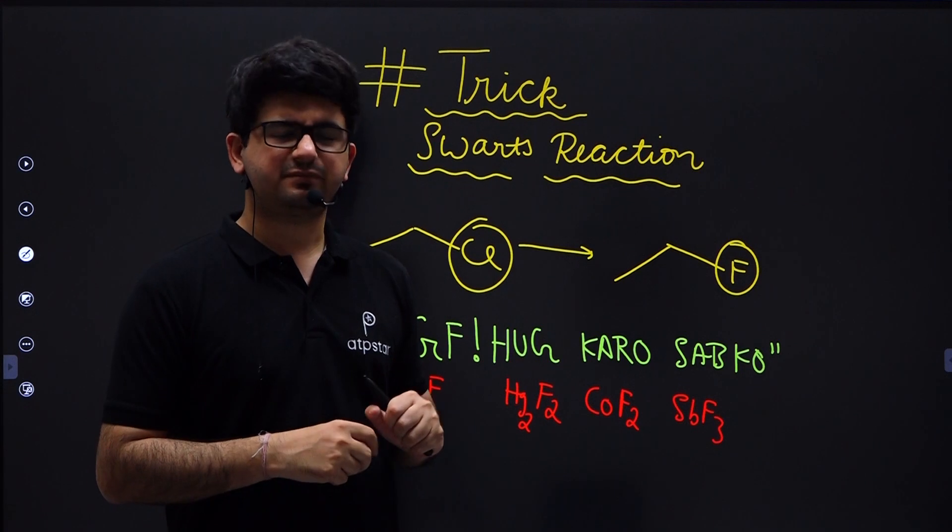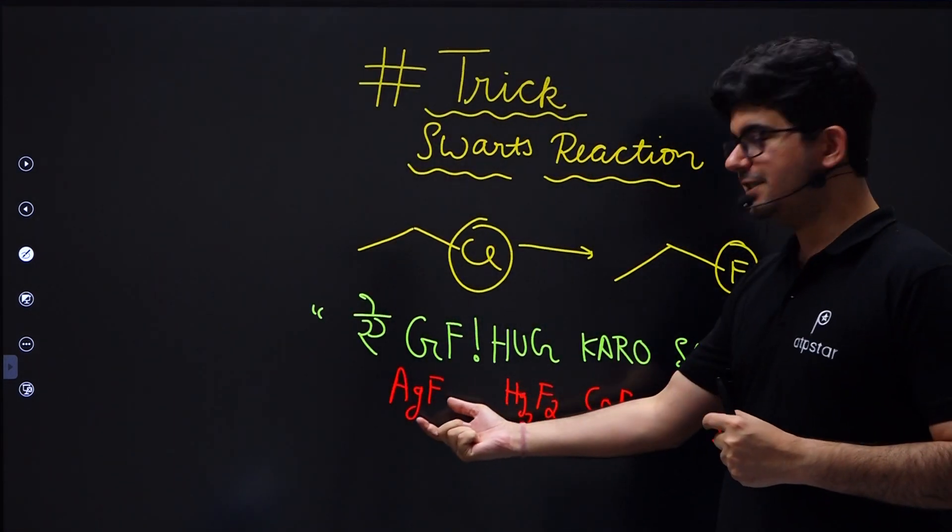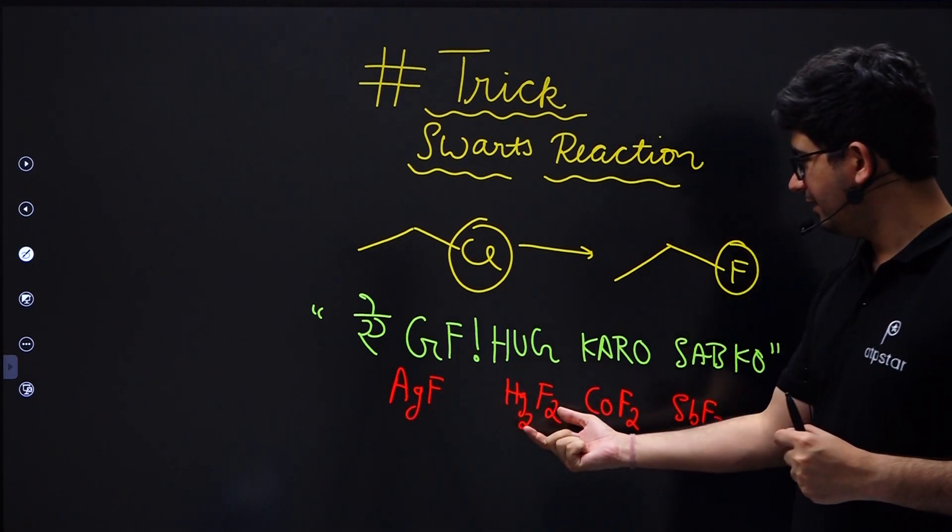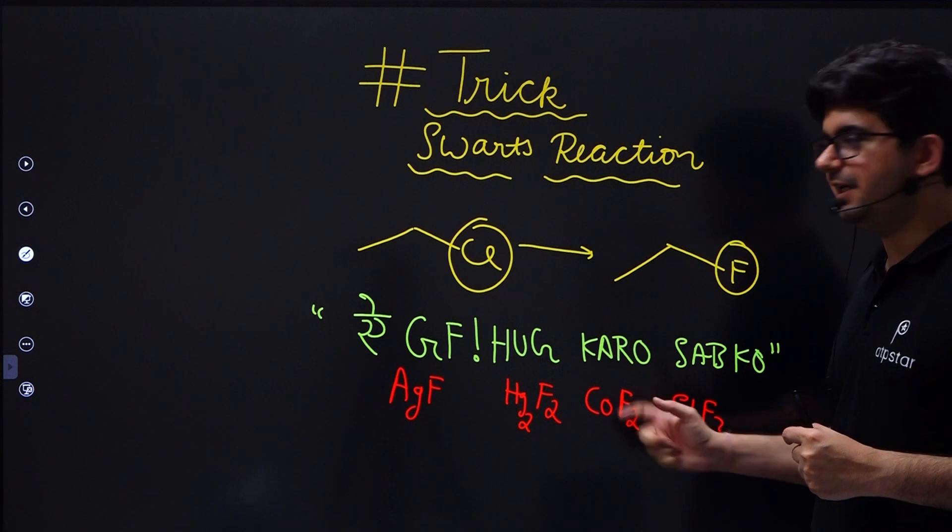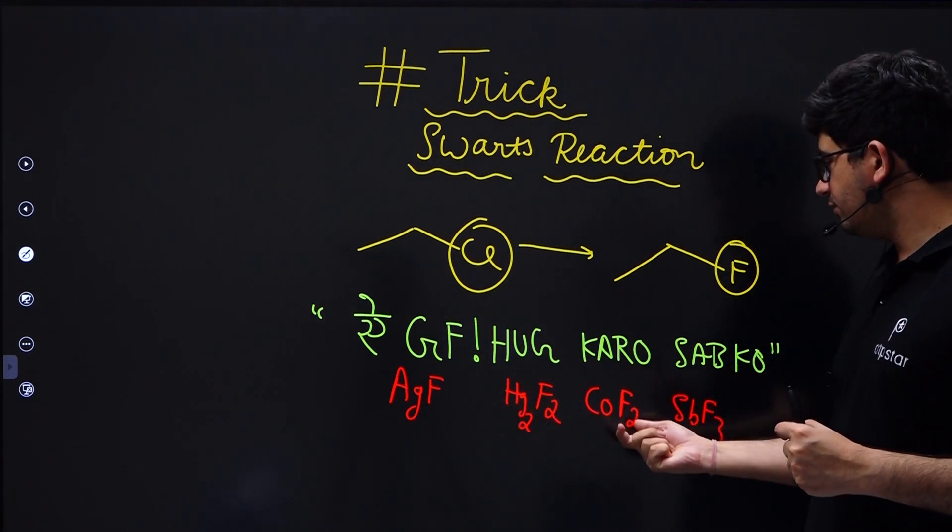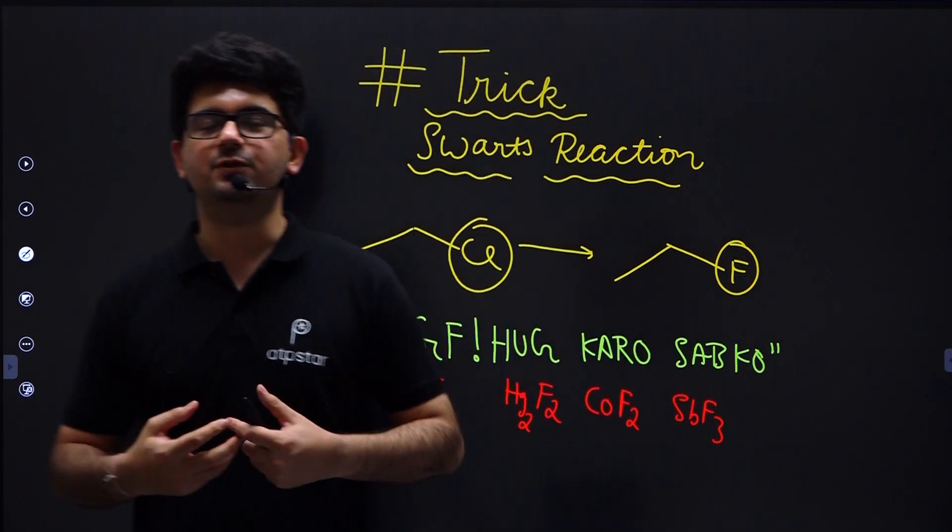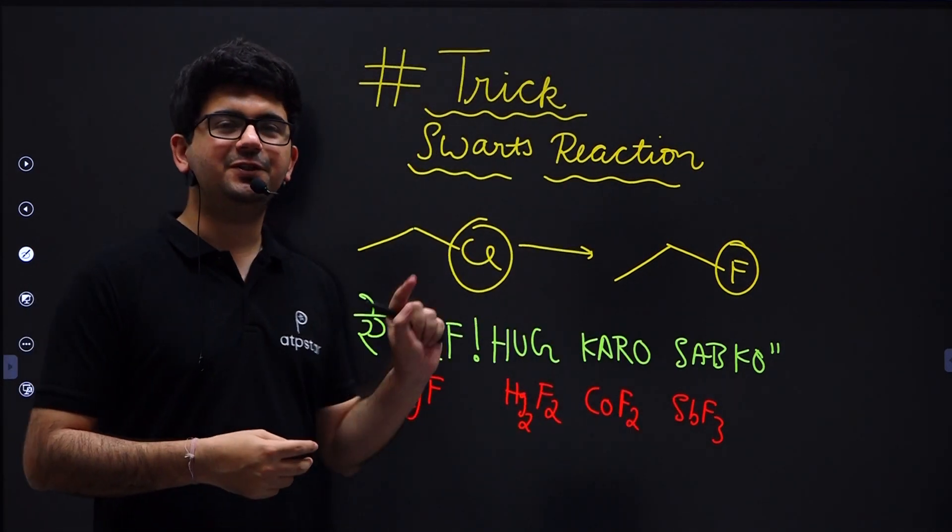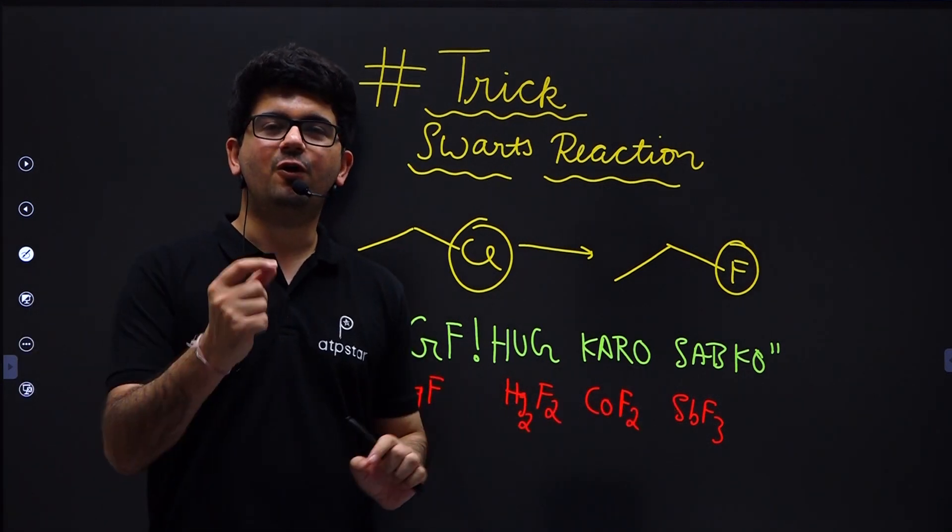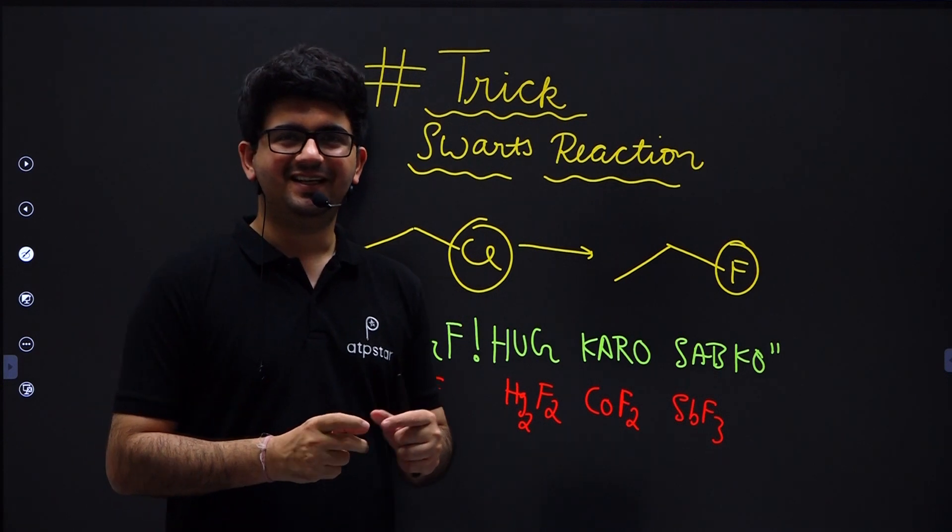When we heat with these, good yield is obtained. Another point is - which ones are these? They are AgF silver fluoride, Hg2F2, CoF2, and SbF3. These are used. It's possible that in exams, questions may come in multiple correct format, so it's very important to remember these. Now how to memorize which fluorides are here - for that I'm telling you a trick.